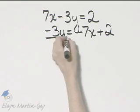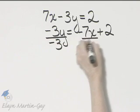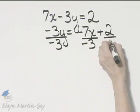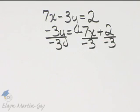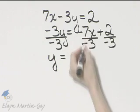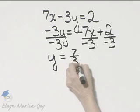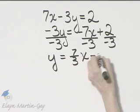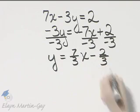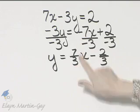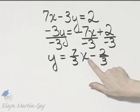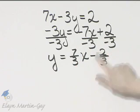Now I will divide all terms by the coefficient of y, which is negative 3, because I am solving for y. And y will be, that will be 7 thirds x minus 2 thirds. A negative divided by a negative, that's positive, and there's my x. And then there's minus 2 thirds.